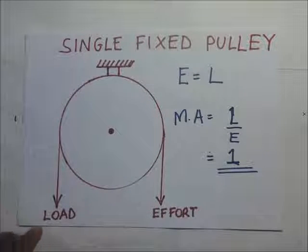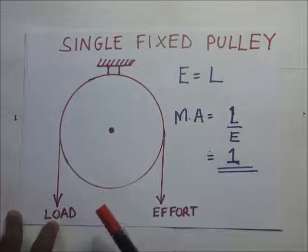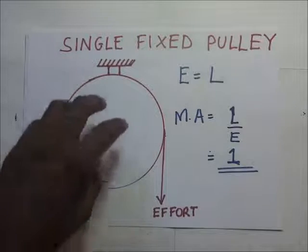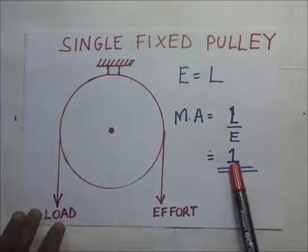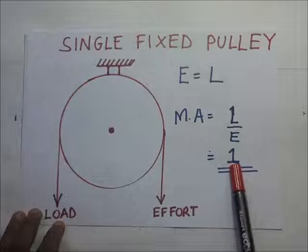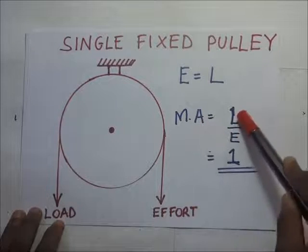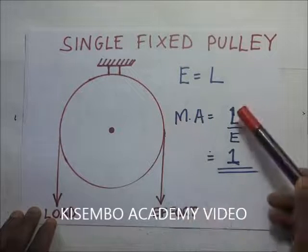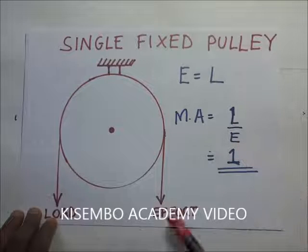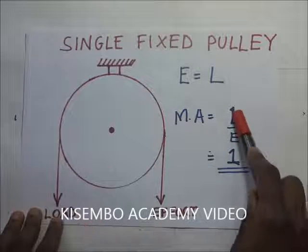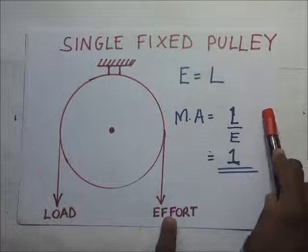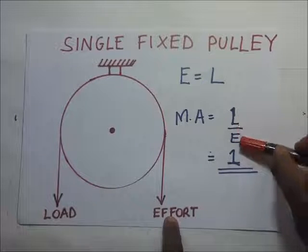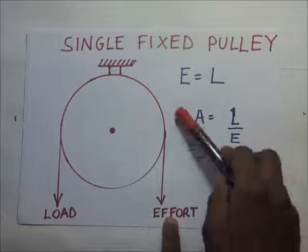And if the groove is frictionless and the weight of the rope is negligible, the mechanical advantage of this is 1. Remember we said that mechanical advantage is going to be equal to load over effort. So it means that if the load is 100 newtons, then it means you are going to use an effort of 100 newtons. And so it means this divide by that will give you 1 as the mechanical advantage.